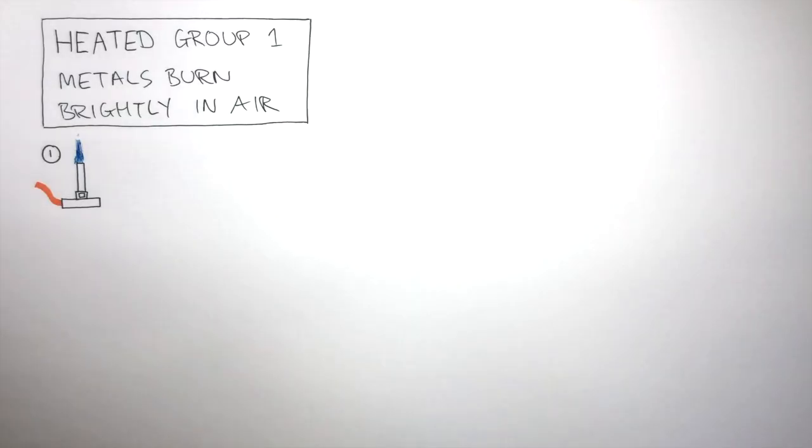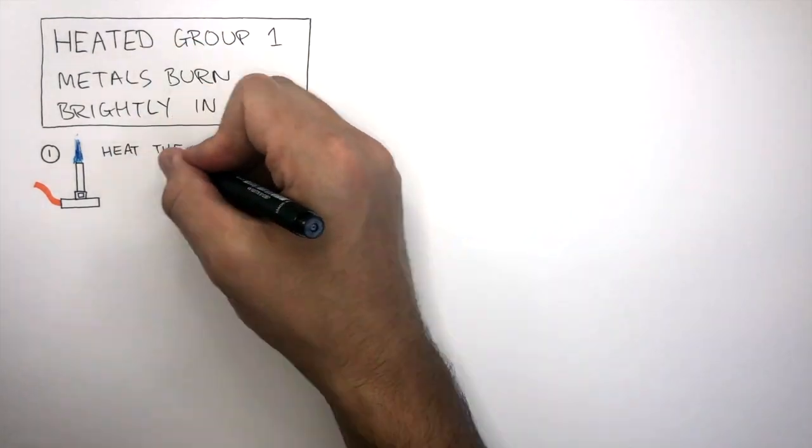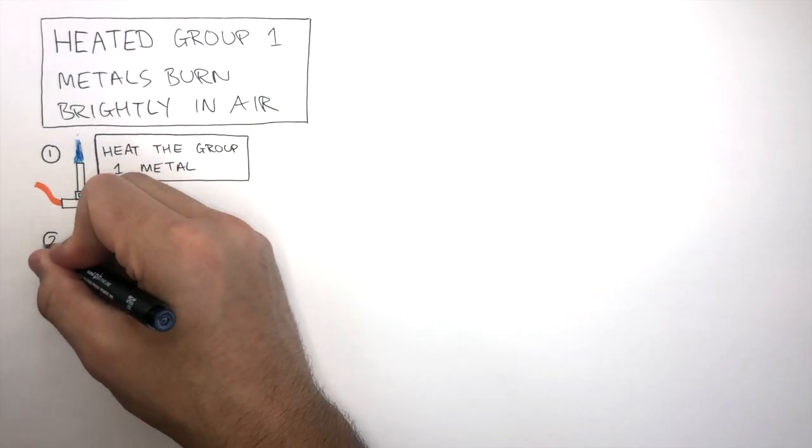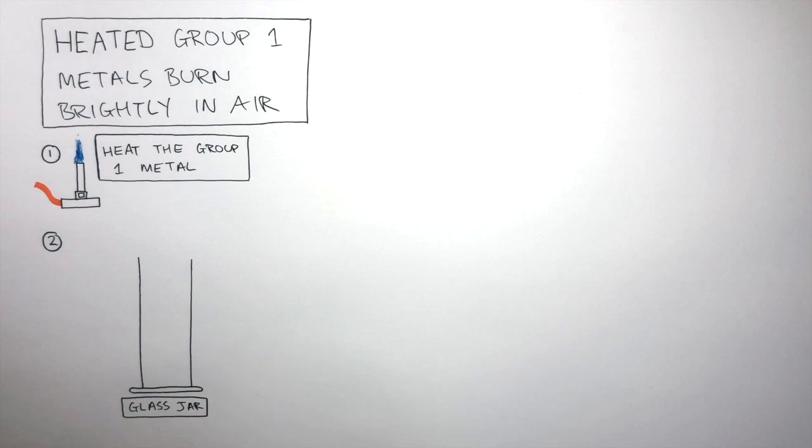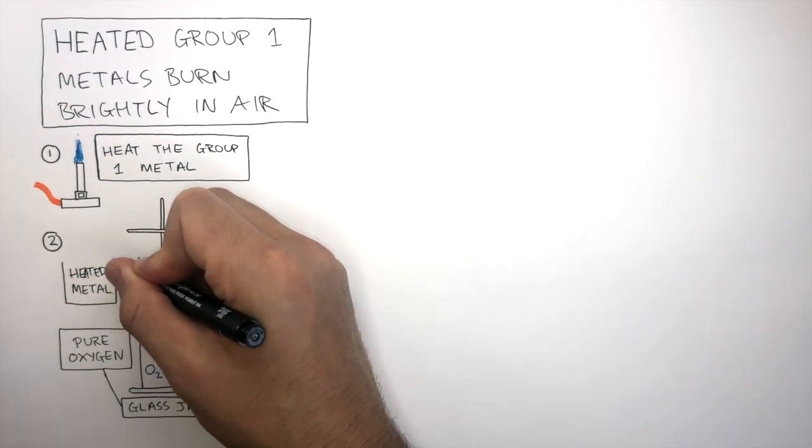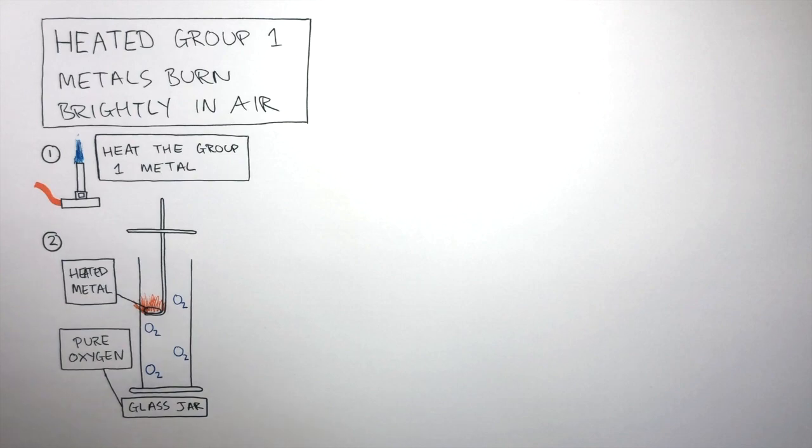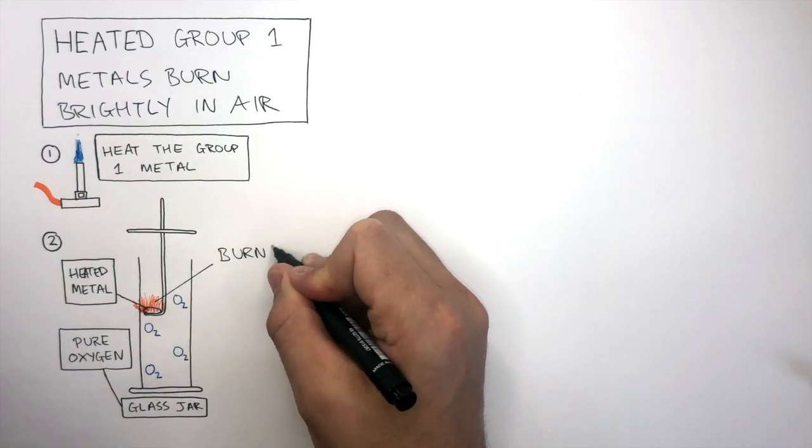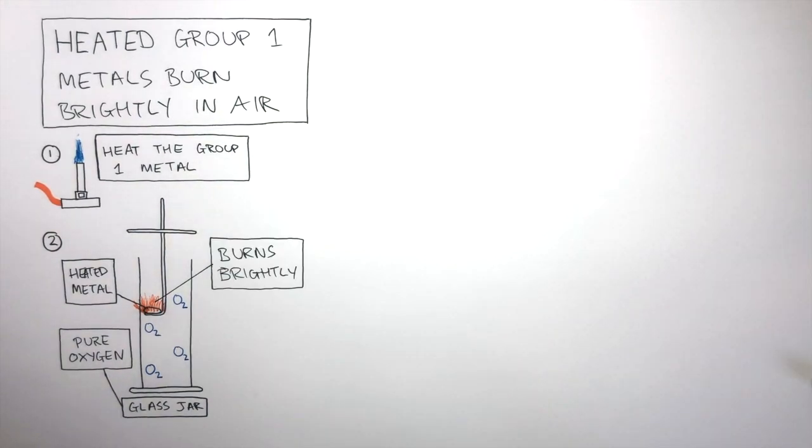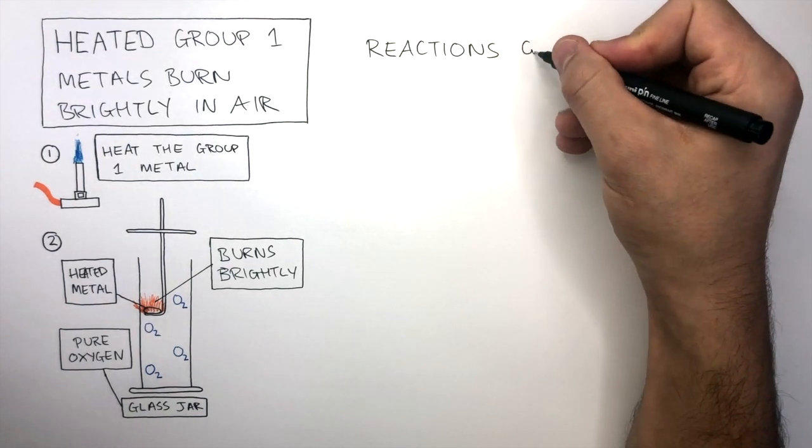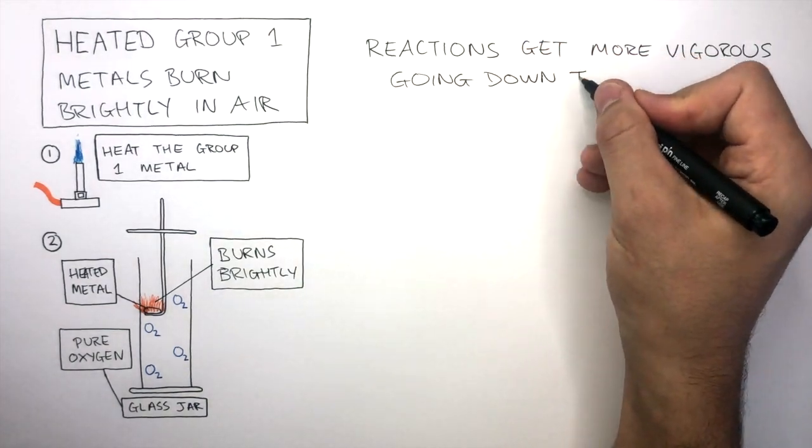To carry out this experiment, you need a Bunsen burner and you'll use this to heat the group 1 metal. The next stage is you have a glass jar full of pure oxygen. You place the heated metal inside the glass jar and it instantly reacts where it burns brightly. This happens with all the alkali metals and reactions get more vigorous as you go down the group.